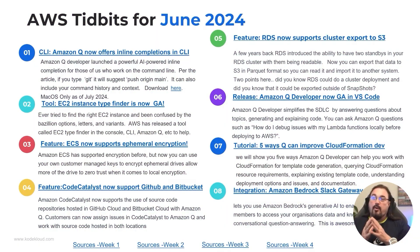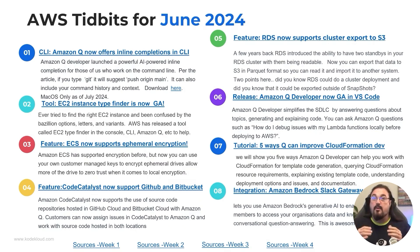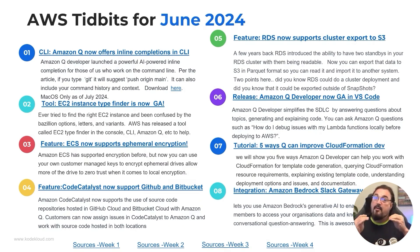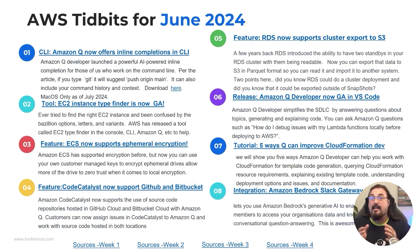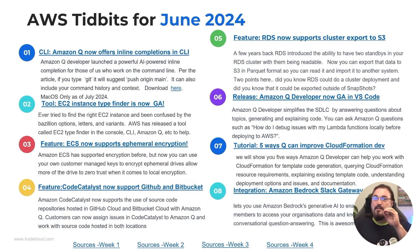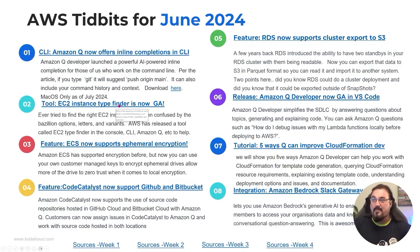Number two, we're going to have an EC2 instance type finder, which allows you to find your EC2 instance workload. It's going to allow you to use machine learning to match your workload with the type of EC2 instance that you might need. Now, there are hundreds of EC2 instances, so figuring that out can be kind of tricky, but this is buried inside the console, so we're actually going to take a look at this one.